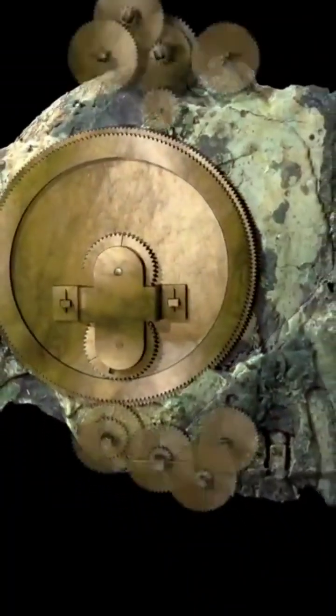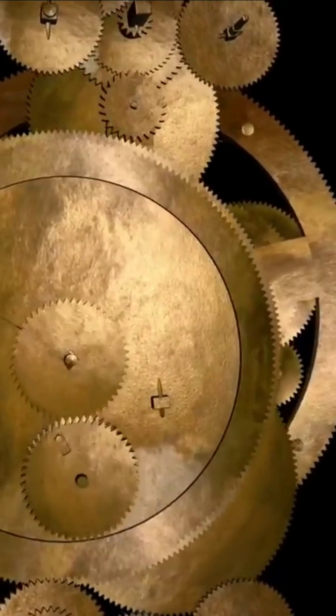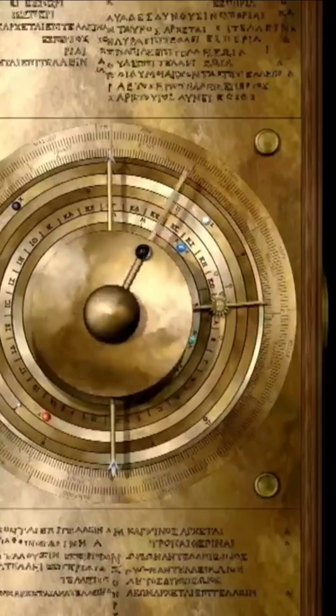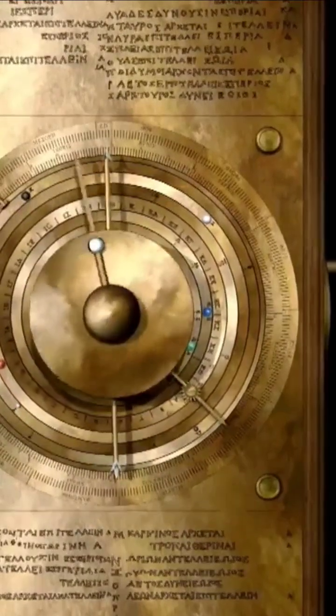The mechanism is made up of a complex system of gears and dials with inscriptions in ancient Greek. It is thought to have been operated by turning a hand crank, which would rotate the gears and display the astronomical data on the dials.